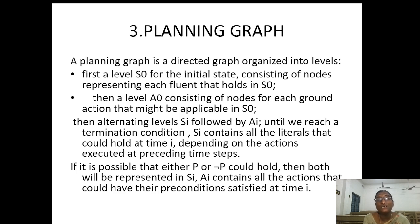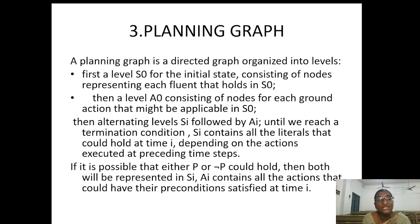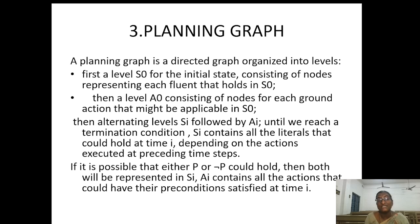At level A0, there are nodes for each ground action that might be applicable in the initial state. The initial state is represented as S0 and the action done in that state is A0. Alternate levels SI are followed by AI. In state SI, an action takes place. If either P or not-P could hold, both will be represented. AI will contain all the actions that could have their preconditions satisfied at time I.